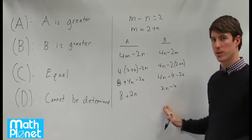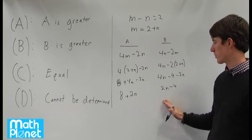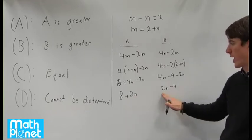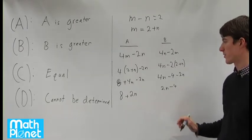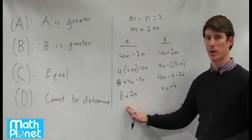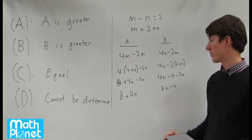Now we have to compare these two simplified expressions in terms of one variable. They both have 2n, which is our unknown, but this one is 2n plus 8 and this one is 2n minus 4, so this one must be bigger by a difference of 12. Therefore, column A is always greater than column B.